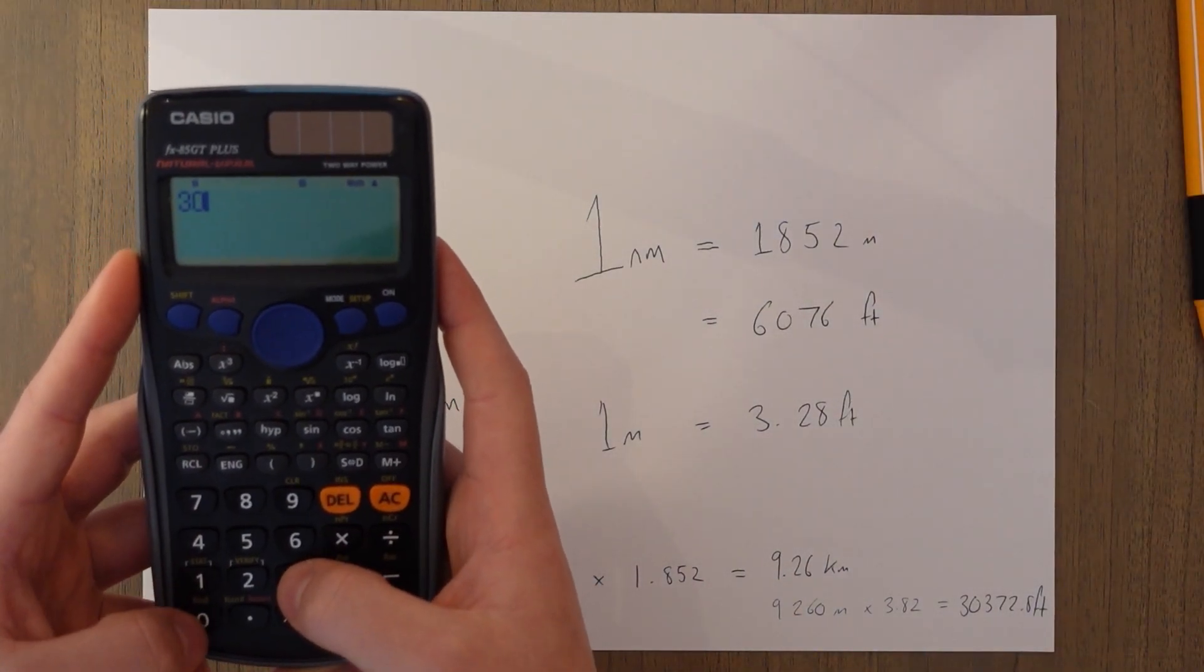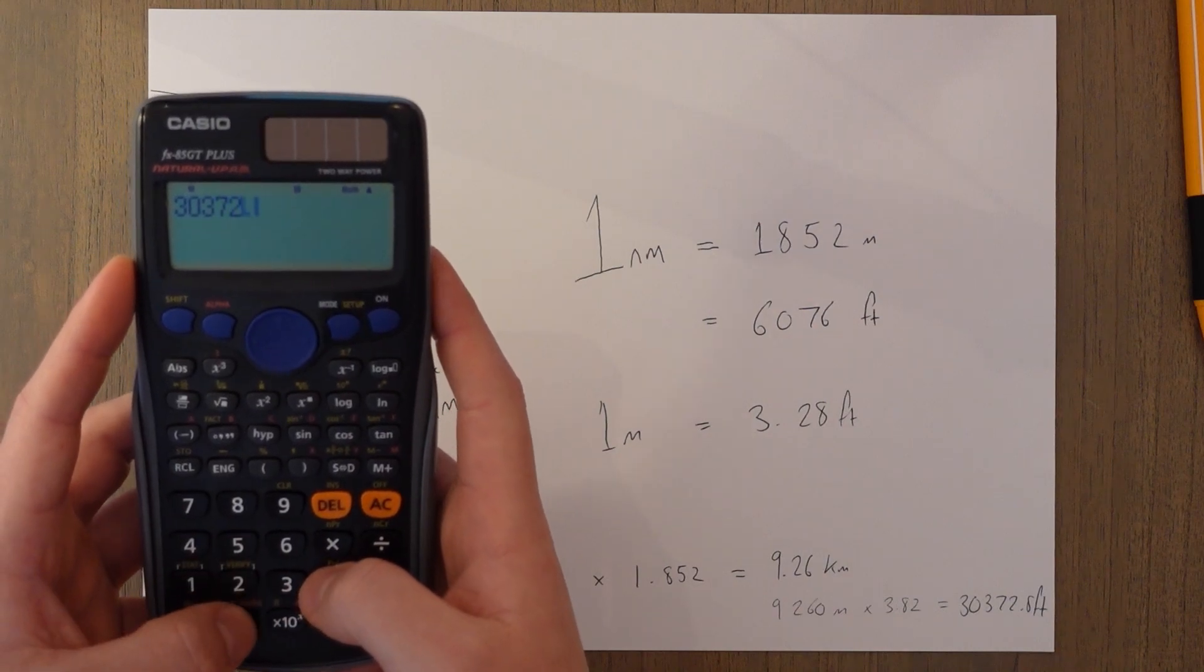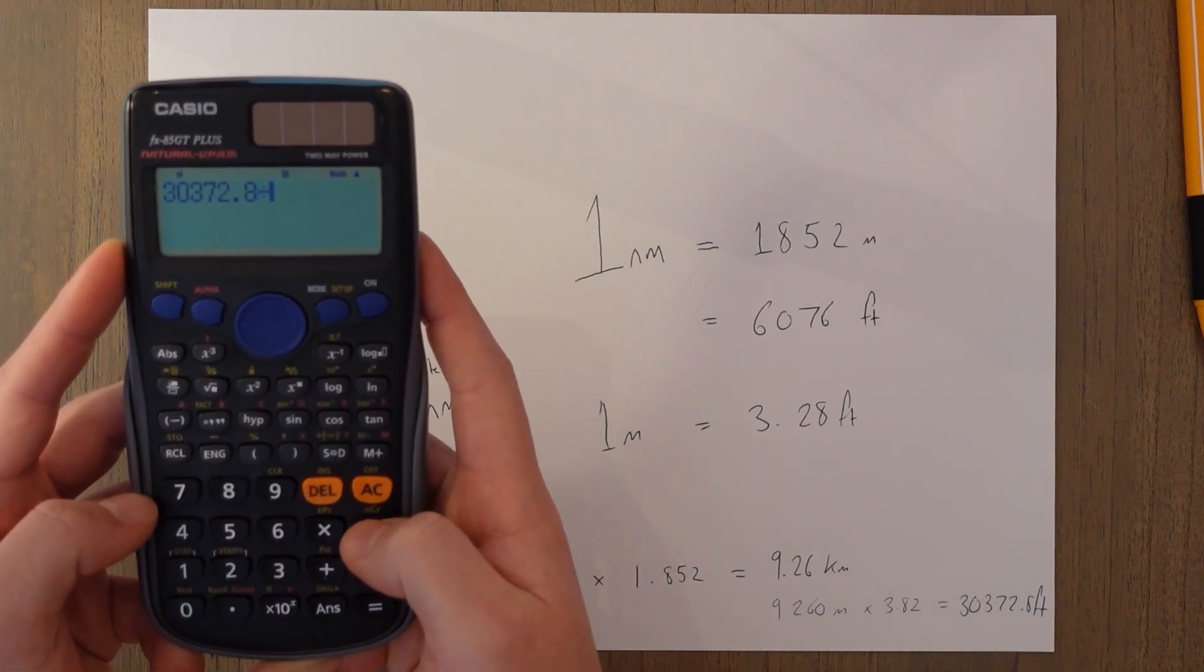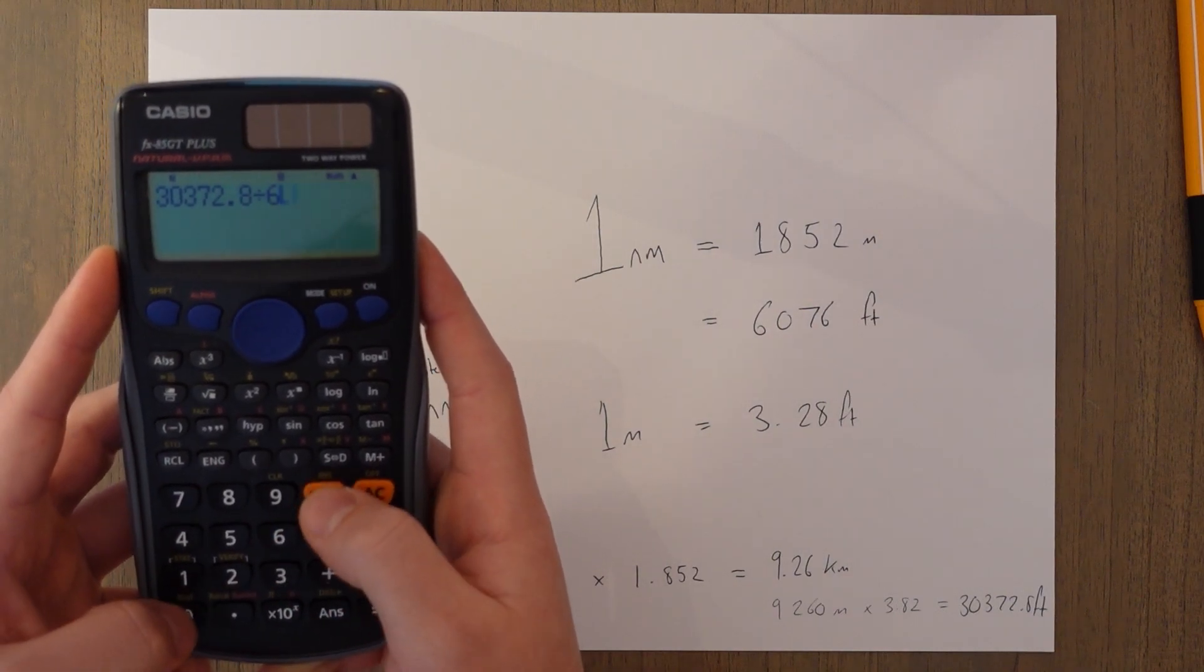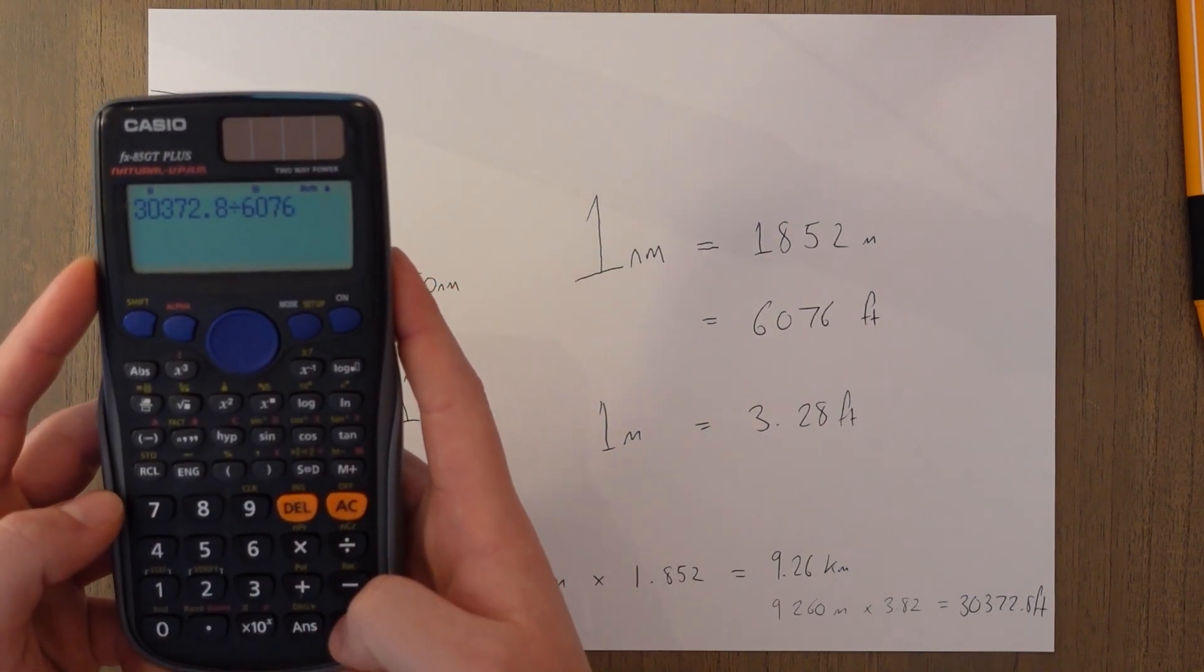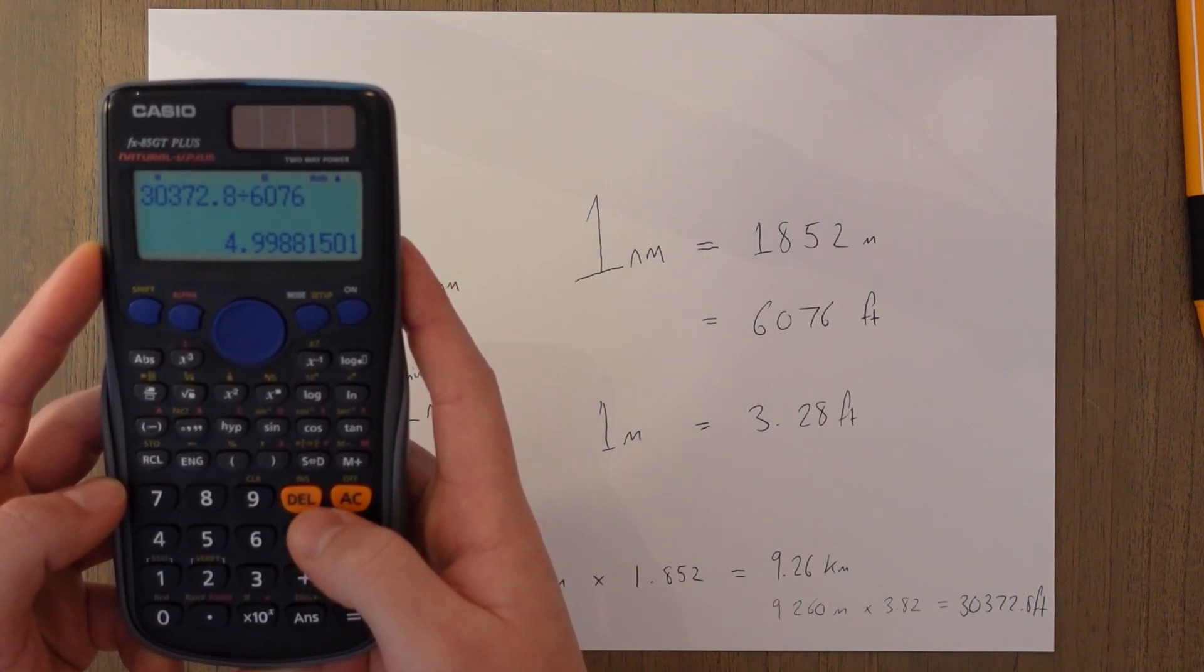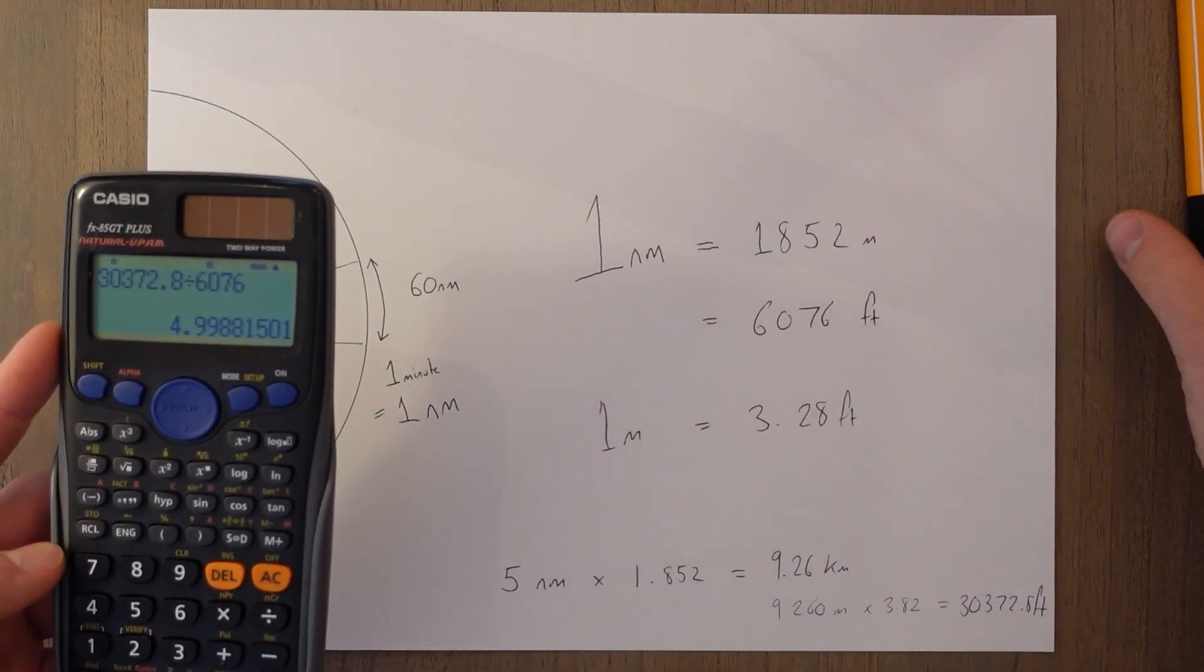So we have 30,372.8 divided by 6076 equals 4.99, yeah let's call that five.